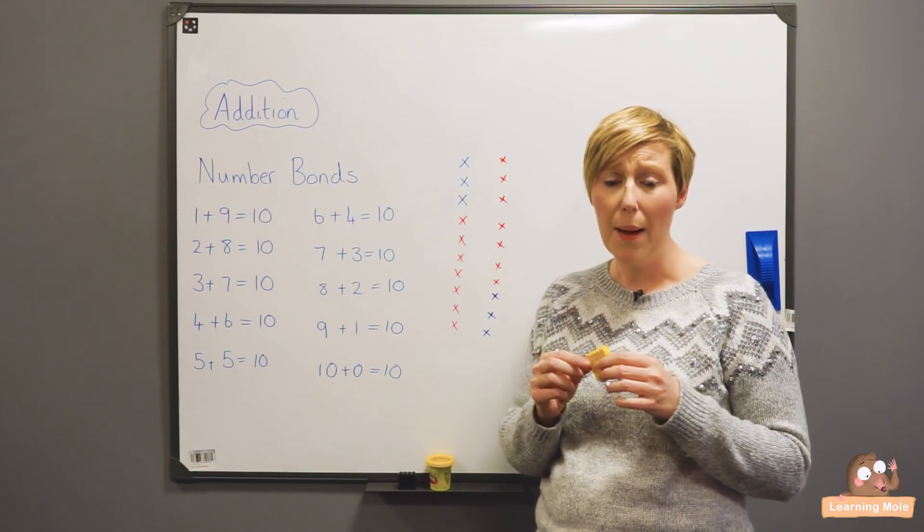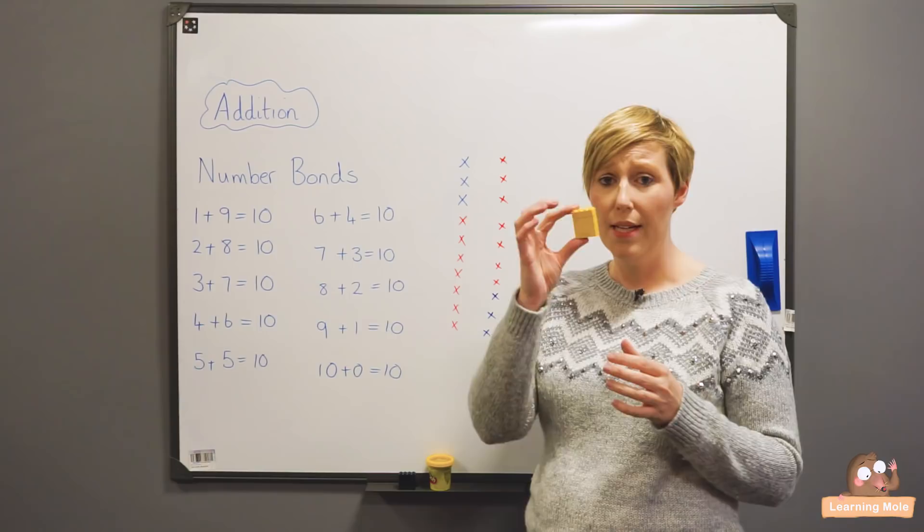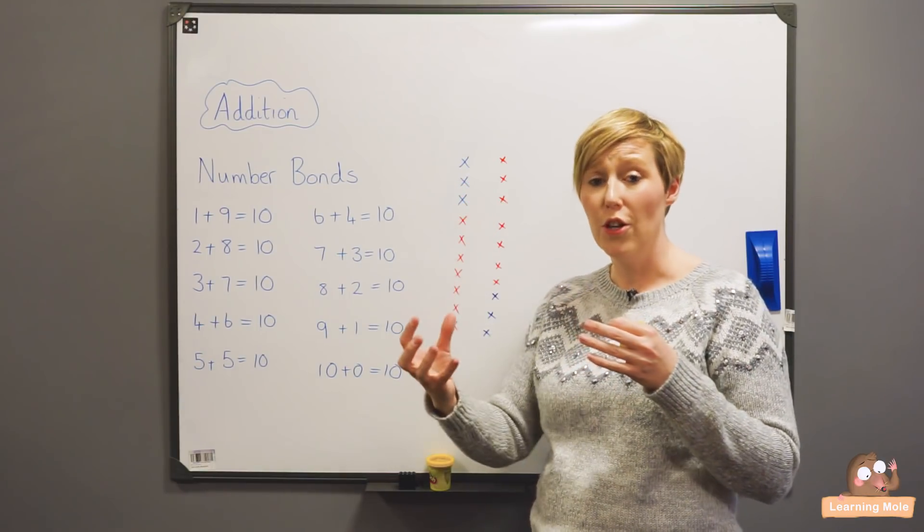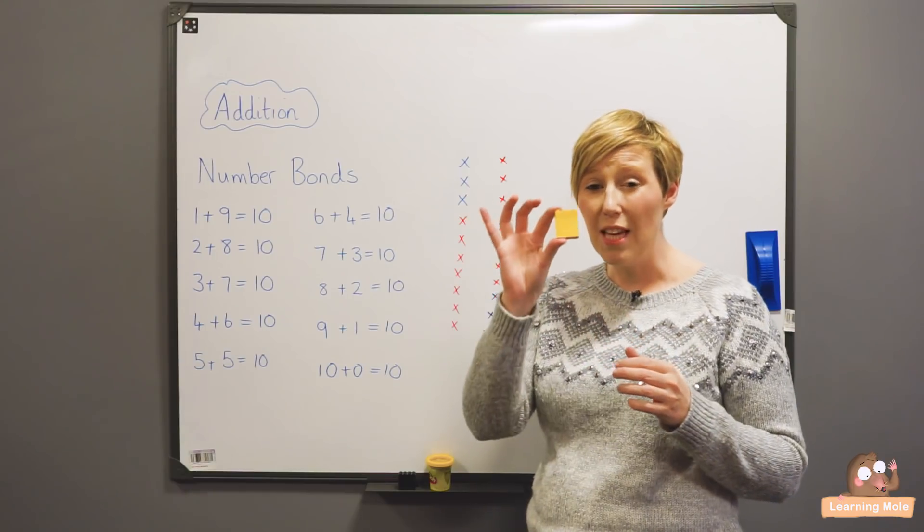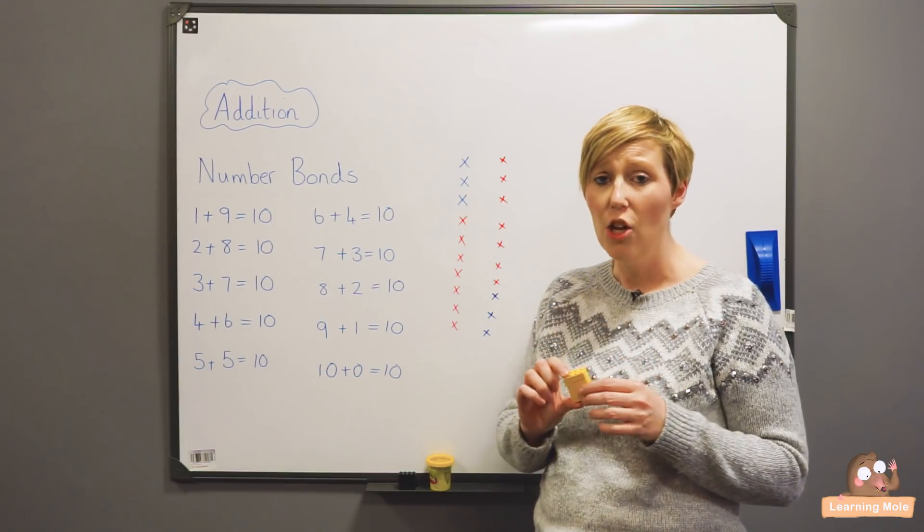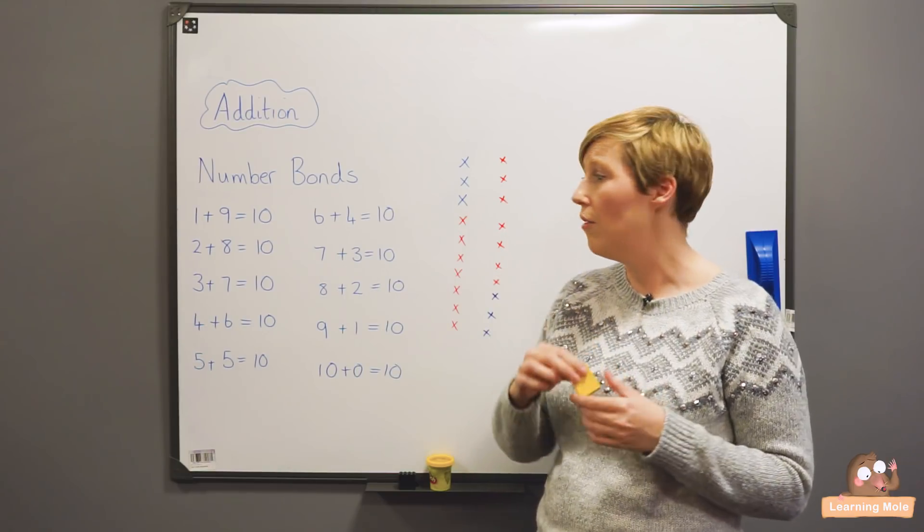Lego is a great way to show that because you can do your three Lego bricks in yellow and then your seven in a different color, and then reverse it, and the children will see very, very clearly that their towers are exactly the same size. So it is a really good tool for that.